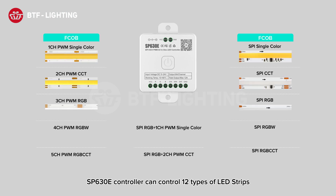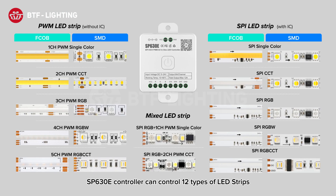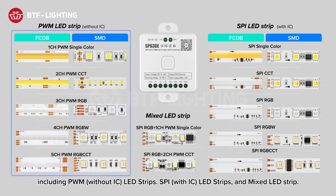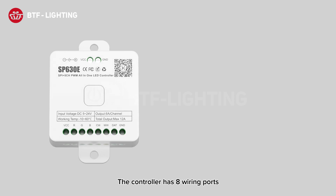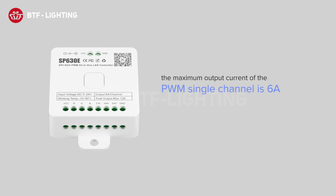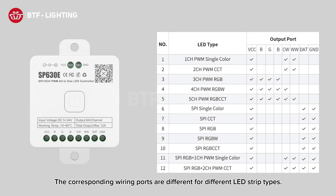The SP630E Controller can control 12 types of LED strips, including PWM without-IC LED strips, SPI with-IC LED strips, and Mixed LED strips. The controller has 8 wiring ports. The maximum output current of a single PWM channel is 6 Amperes, and the maximum output current of the whole machine is 12 Amperes. The corresponding wiring ports are different for different LED strip types.